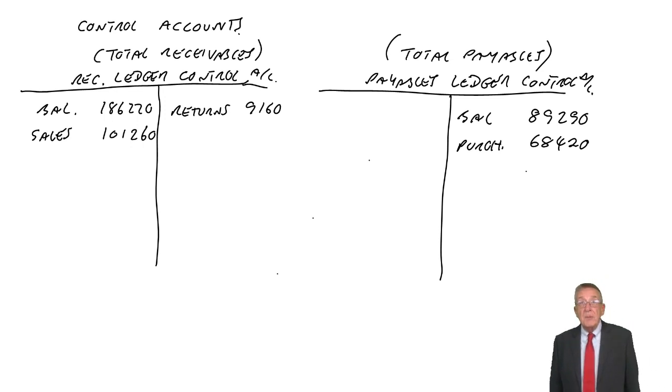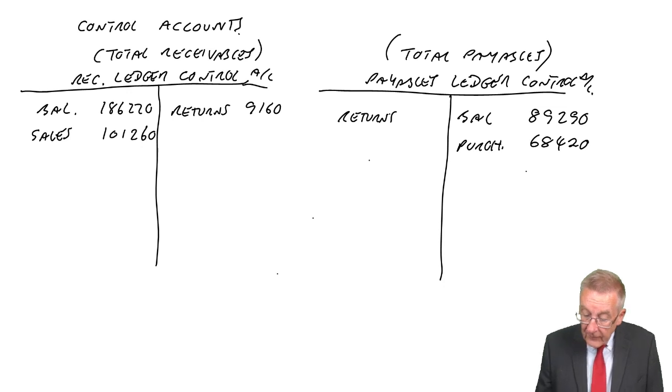Similarly, purchase returns. We've bought goods, we've returned them, we'll owe less money. Debit payables for 4,280.